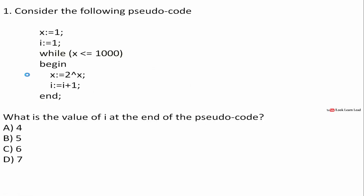The first question: we have been given a pseudocode and we have to calculate the value of i at the end of the pseudocode. Here, x is initialized to 1, i is initialized to 1, and there is a while loop for x less than or equal to 1000. Inside the loop, x is equal to 2 to the power x. After the first iteration, the value of x becomes 2 to the power 1, which is equal to 2, and i becomes i plus 1, which is equal to 2.